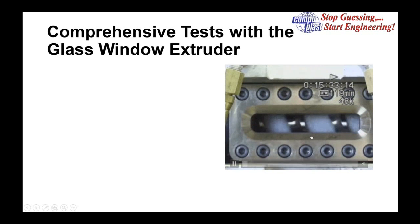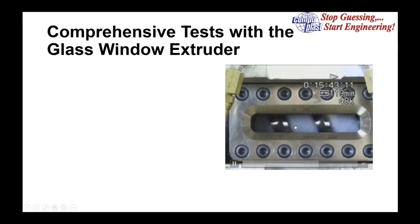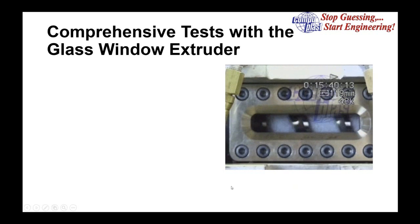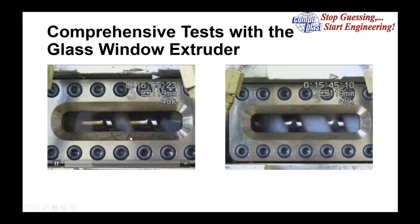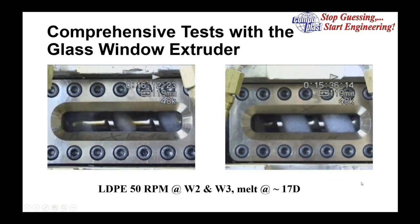In some cases we notice something different further down the screw: the solid bed is discontinuous. Looking closer at the channel — the melt pool looks empty because the amorphous polymer is clear when molten, so you can see right to the root of the screw. But the solid bed gets narrower and narrower while the melt pool gets wider, and at some point the solid bed becomes discontinuous — what we call solid bed breakup.